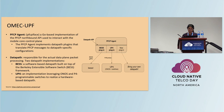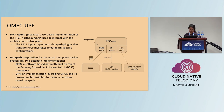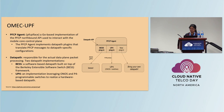UP4 is an implementation leveraging P4 programmable switches to realize a hardware-based data path. The combination of PFCP agent and UP4 is referred to as P4 UPF, while BESS-UPF denotes the combination of PFCP and the BESS data path. Support for new data paths can be provided by implementing new plugins. CNDP integration with BESS for UPF provides flexibility in terms of deployment and horizontal scalability.